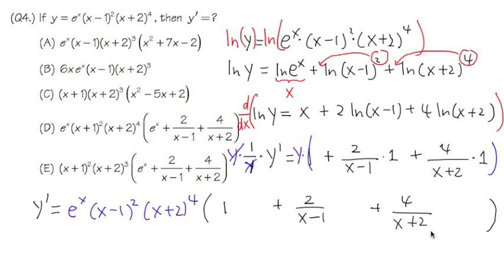However, this doesn't match any of the answer choices. It looks very similar to choice D, but they are different — the exponent here is e to the x versus 1 in choice D; it's not a typo. To fix this, we need to do more algebra. We have 1 plus 2 over x minus 1 plus 4 over x plus 2, so we need to add these fractions.